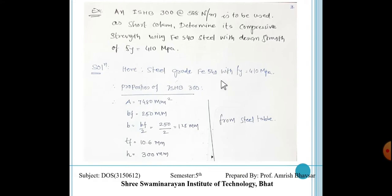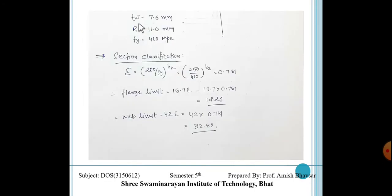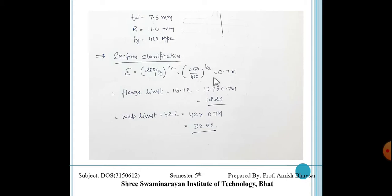The section properties are the same as before: Area = 7480 mm², B = 125 mm, TF = 10.6 mm, H = 300 mm, TW = 7.6 mm, R = 11 mm, FY = 410 MPa. The key difference is that when classifying the section, we must find epsilon which depends on FY. With FY = 410, epsilon = √(250/410) = 0.781.